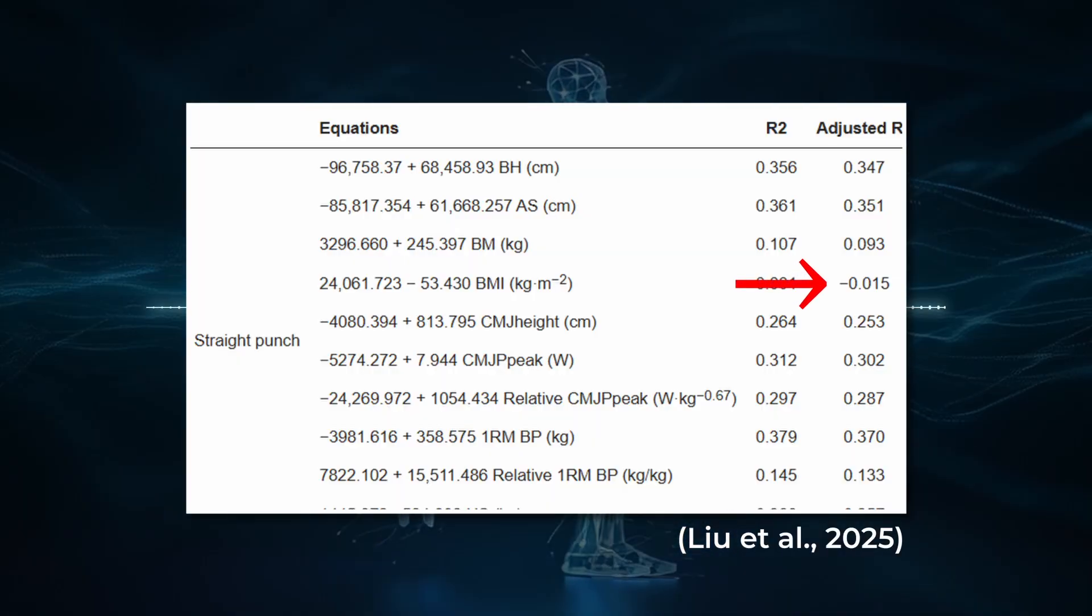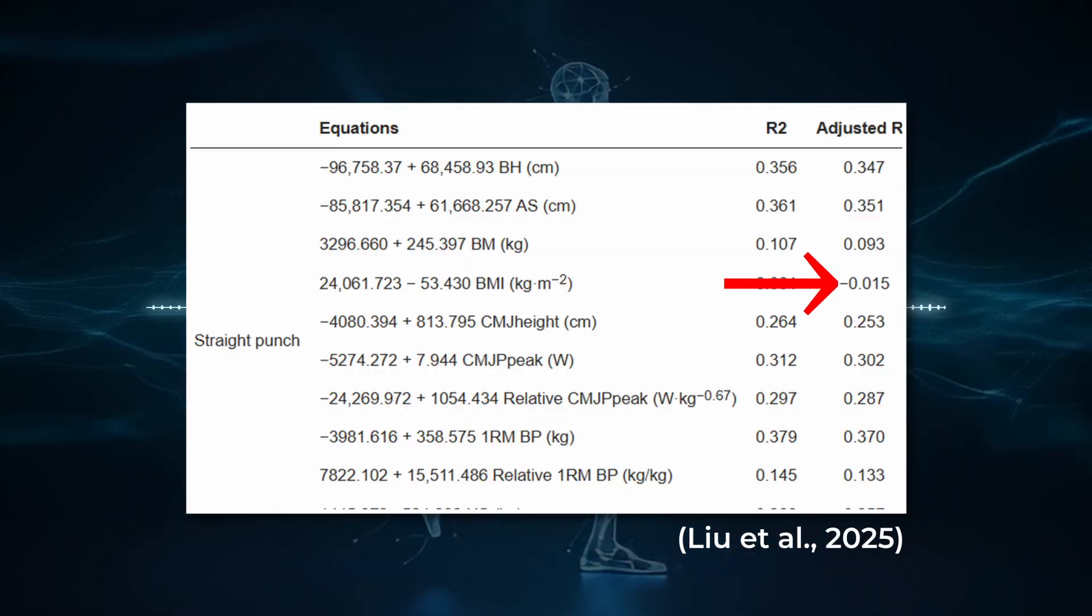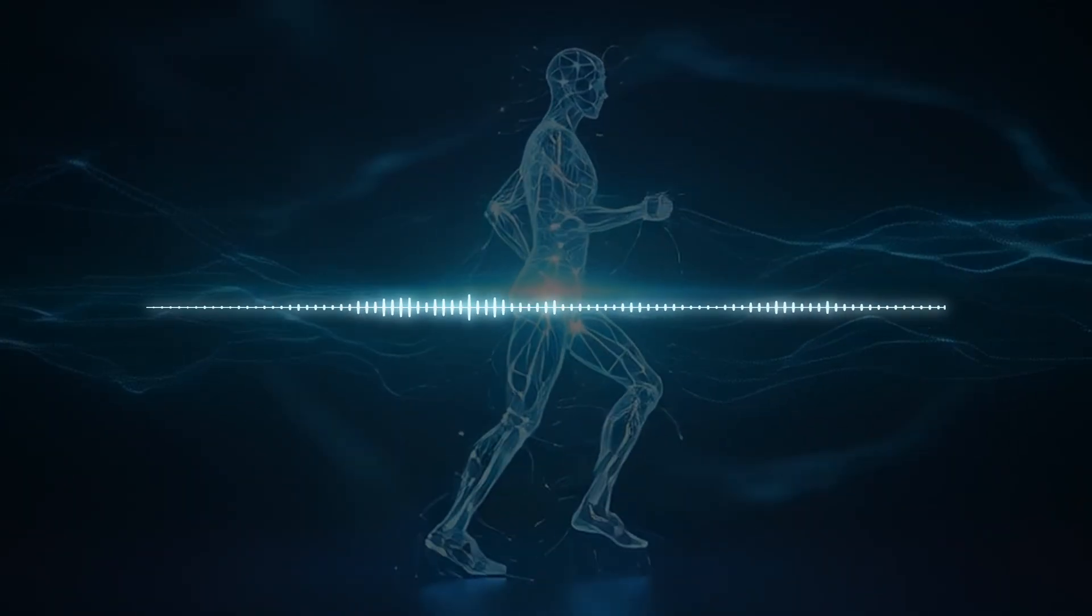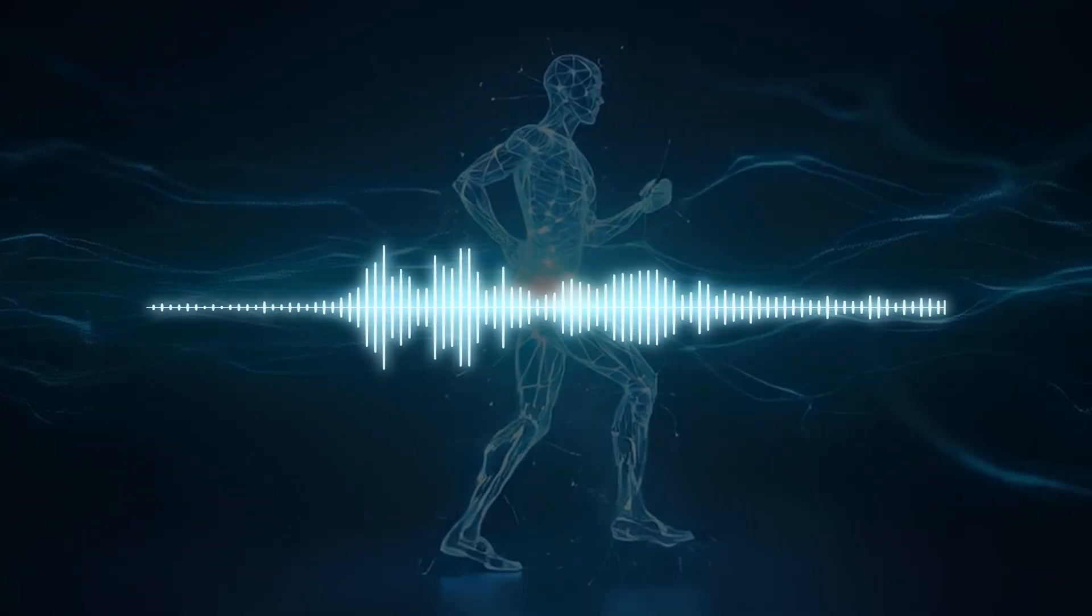But here's what shocked the researchers. BMI actually showed negative correlations with relative punch power. Being heavy for your height doesn't make you hit harder, it makes you less efficient.